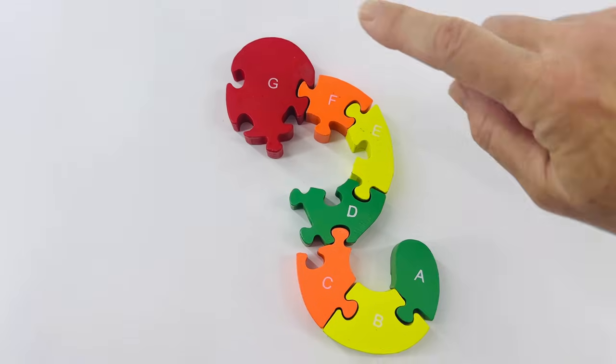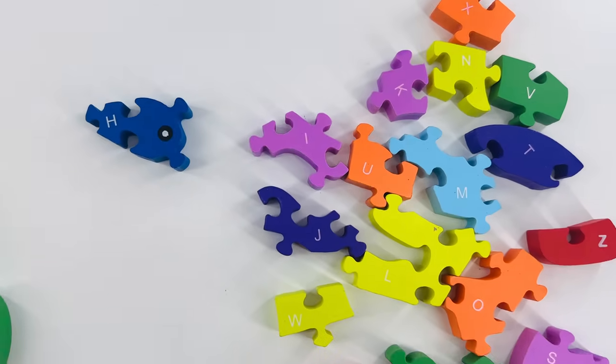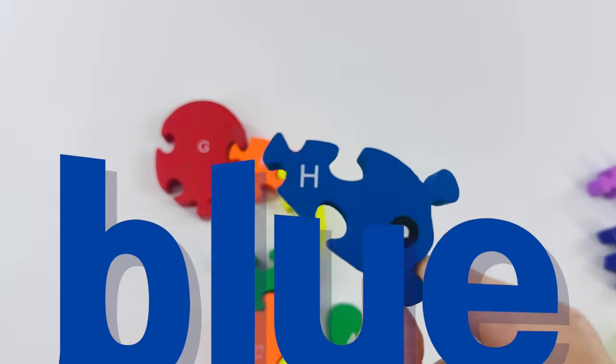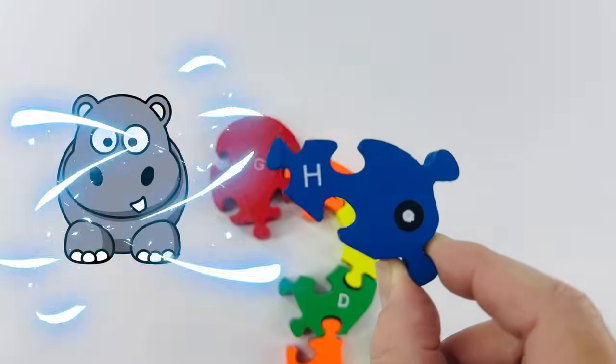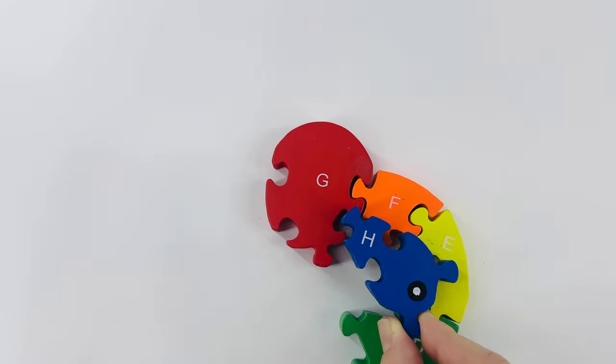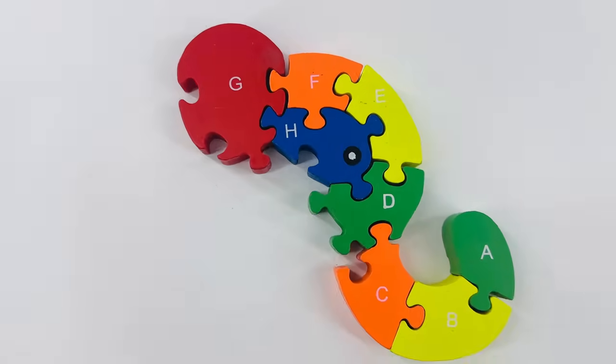After the letter G is H. Can you point to the letter H for me? Here it is. This letter H is blue. H is for hippo. Let's try to put it right here. It fits. I wonder what animal this is going to be.